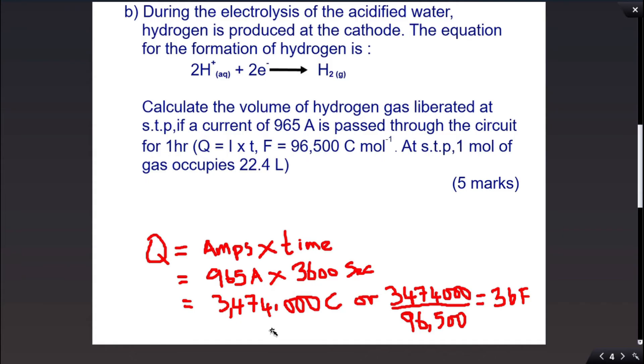That's a large number and it may be a bit untidy to work with. So to convert this number to something that is easier to work with, we simply divide by 96,500 to get 36 Faraday. This number, 96,500 coulombs, equals 1 Faraday.